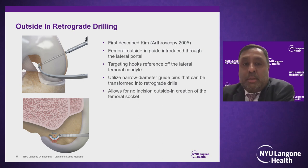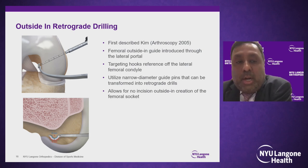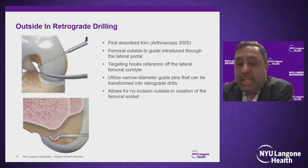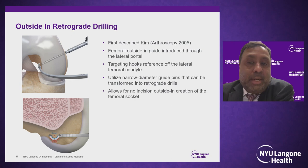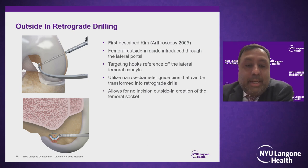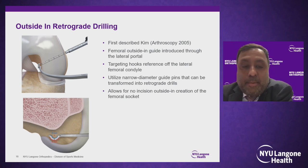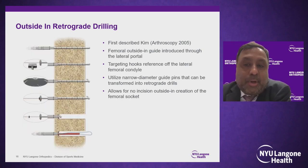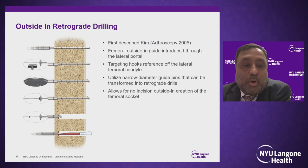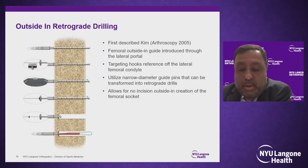With these shortcomings, Kim first described returning to an outside-in technique — the outside-in 2.0. A femoral outside-in guide is introduced through the lateral portal; targeting hooks reference off the lateral femoral condyle, with the inner aspect being 6 millimeters in diameter and the outer aspect 9 millimeters. You then utilize narrow-diameter guide pins that can convert into retrograde drills. A rubber grommet is placed on the trocar, then withdrawn slowly with high revolution, allowing you to measure the exact length of the femoral tunnel and create a no-incision outside-in femoral socket.